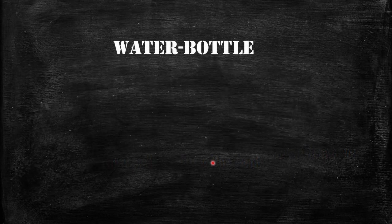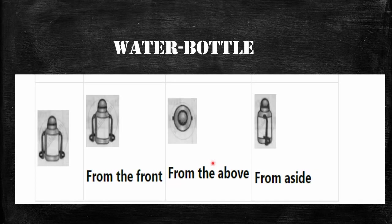The third object is the water bottle. This is your object. From the front view it looks like this. From the above view it looks like this. And from the side view it looks like this. So, like this you will draw.